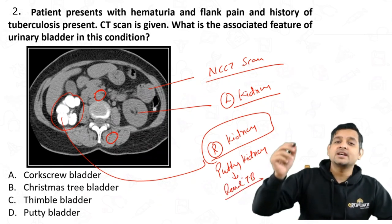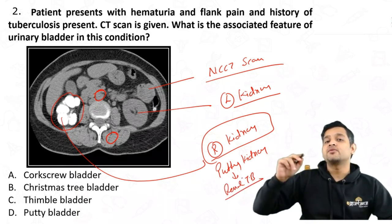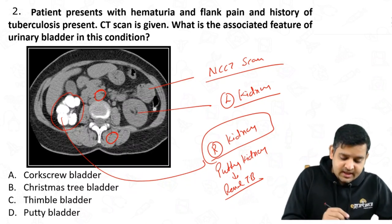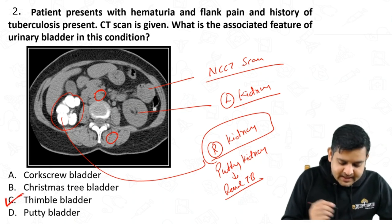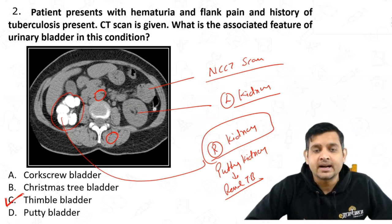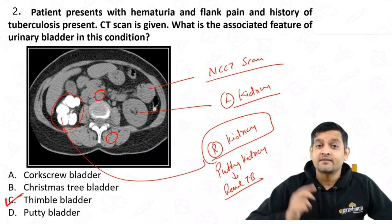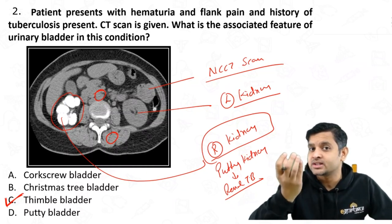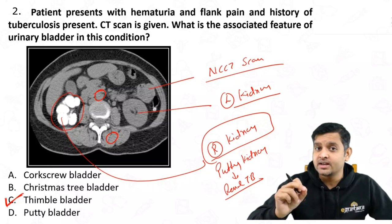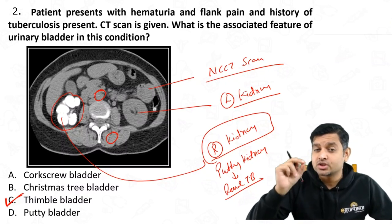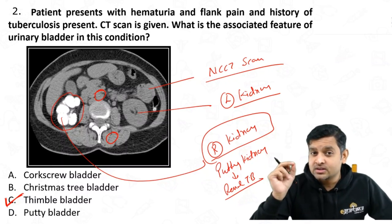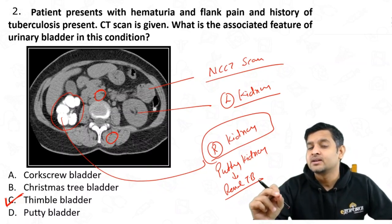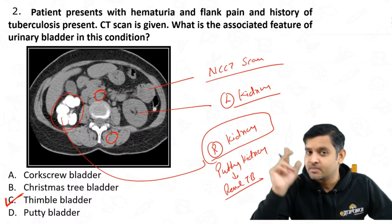The question asks about the finding of TB in the urinary bladder. The answer is thimble bladder. There is nothing called a putty bladder. A small contracted bladder is called a thimble bladder, which is seen in TB as well as schistosomiasis. Schistosomiasis shows calcification in the bladder, but TB does not show calcification in the bladder.